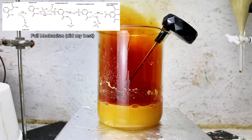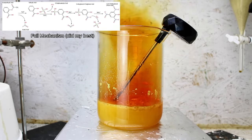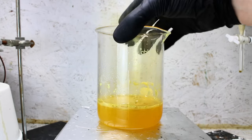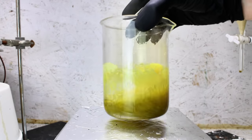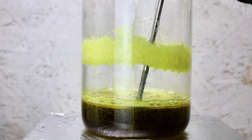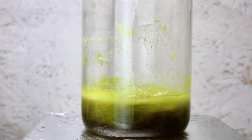Almost as soon as the reaction stopped spewing toxic red gases, the mixture quickly turned a distinct green color which slowly cleared up as I allowed it to cool to room temperature. Once the mixture had cooled completely, it had become a solid mass of yellow picric acid crystals which I now needed to clean up.